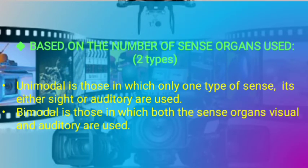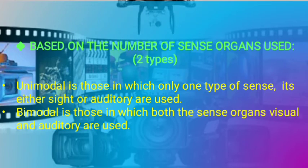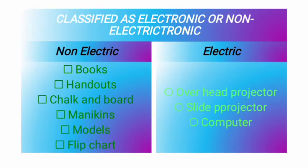Let's move forward to the classification based on the number of sense organs used. There are two types: first, unimodal — those in which only one type of sense, either sight or auditory, is used. Next, bimodal — those in which both sense organs, visual and auditory, are used. These could also be classified as electronic or non-electronic. Non-electric examples are books, handouts, chalk and board, mannequins, models, and flip charts. Electric examples are overhead projector, slide projector, and computer.